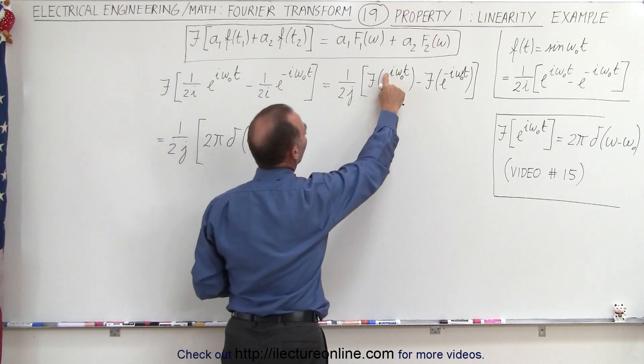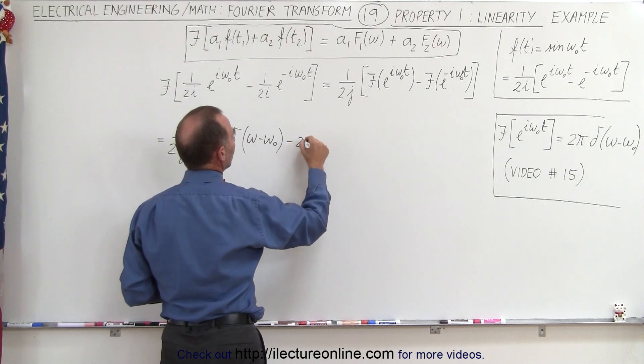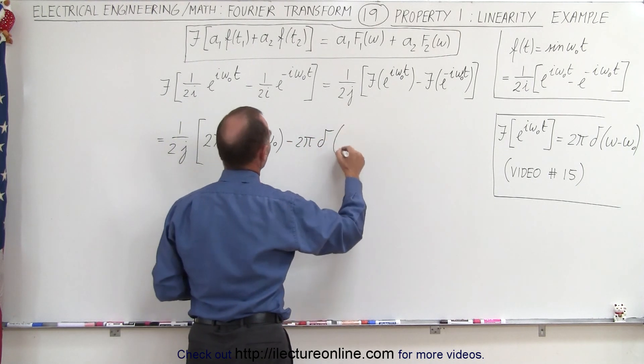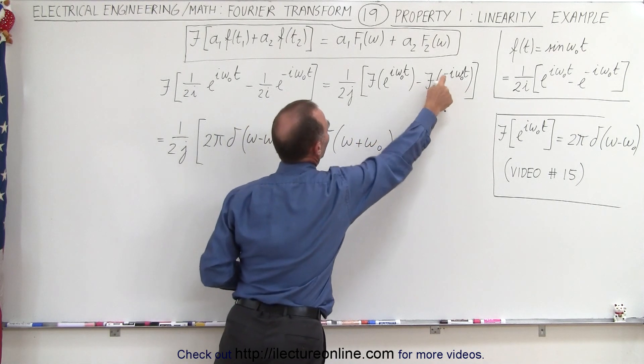That's because we have a positive i omega naught t, and then it will be minus 2 pi times the delta function of omega plus omega naught, because we have a minus here.